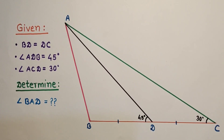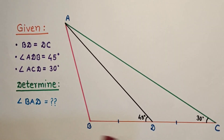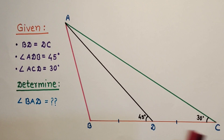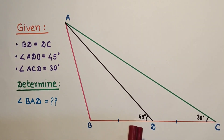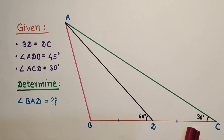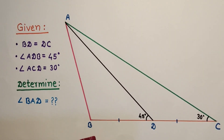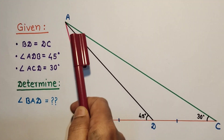Hello everyone, welcome to my YouTube channel. Today let us discuss this question. We are given a triangle ABC where point D is the midpoint of BC, angle ADB is given as 45 degrees, angle ACB is given as 30 degrees, and we have to find the value of angle BAD.